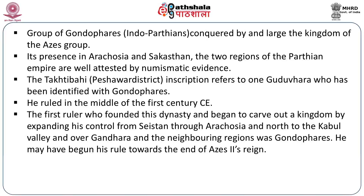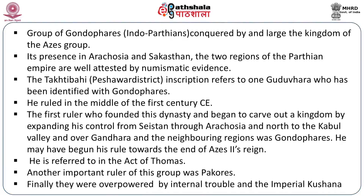Gondofaris may have begun to rule towards the end of Aegis II's reign. Interestingly, he is referred to in the Acts of Thomas. The story goes that Gondofaris wanted to build a palace and asked his Rajashresthi, named Hamban, to get him a carpenter. Saint Thomas came to the court of Gondofaris disguised as a carpenter in order to propagate Christianity. Therefore, the story of Saint Thomas coming to the northwestern part of the Indian subcontinent is referred to in the Acts of Thomas. Gondofaris was succeeded by a series of rulers including Orthognes, Pakores, Sassas, and others.